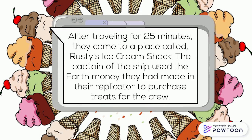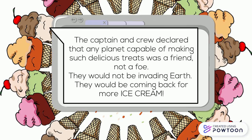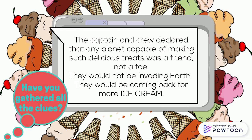After traveling for 25 minutes, they came to a place called Rusty's Ice Cream Shack. The captain of the ship used the Earth money they had made in their replicator to purchase treats for the crew. The captain and crew declared that any planet capable of making such delicious treats was a friend, not a foe. They would not be invading Earth. They would be coming back for more ice cream.